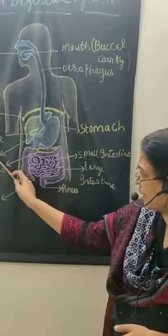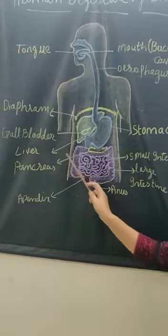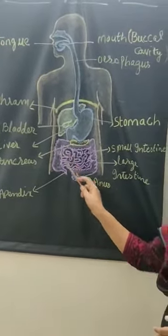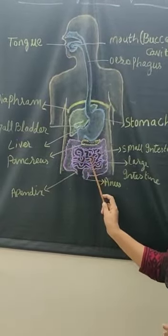And then bile, which is secreted by the liver, converts the fats. The fat particles get digested with bile.